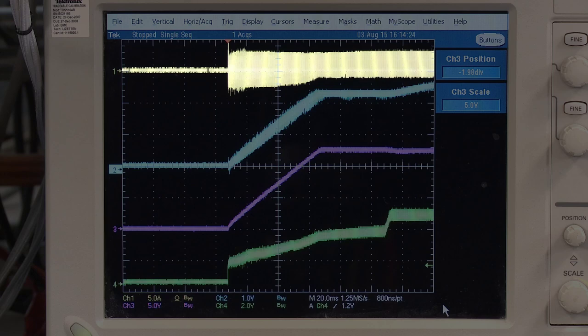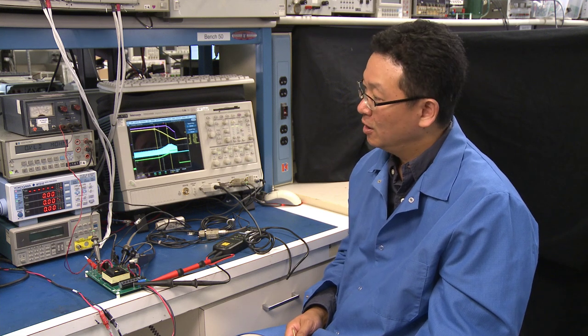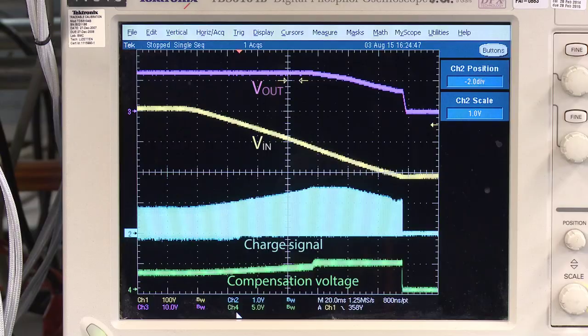You can see that there is no severe overshoot of the switch current during the startup. Let's take a look at the minimum allowable input voltage during the power up. For computing power supply application, it is required to maintain output voltage regulation during the power up. Now it's running at full load and I'm turning off the input voltage. You can see that the output voltage is regulated until the input voltage drops from 400V to 260V providing enough hold-up time.